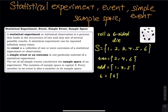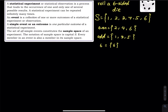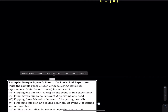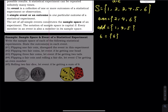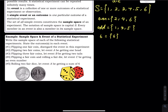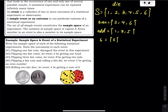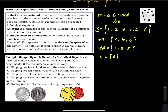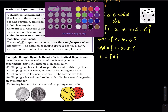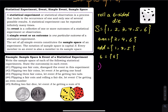Let's practice some problems on sample space and events of a statistical experiment. Write the sample space of each of the following statistical experiments and state the outcomes in each event. Number one is flipping a fair coin. The sample space is: you either get a head or you get a tail.